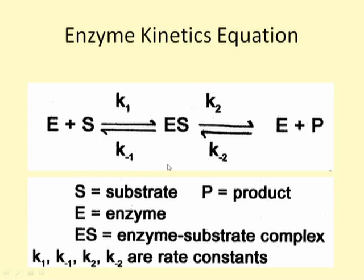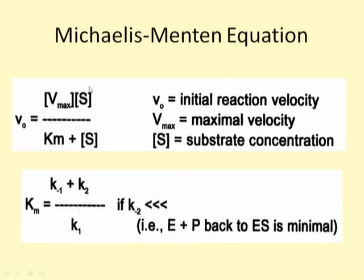Whichever way we derive the equation, the ultimate result is the same: V equals Vmax times S over Km plus S. V0 is the initial reaction velocity. The importance of measuring initial velocity is that if we do not, product buildup becomes significant and the assumption that k-minus-2 is negligible no longer holds. Vmax is the maximal velocity and S in brackets is the molar substrate concentration.